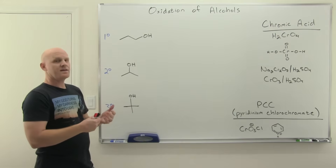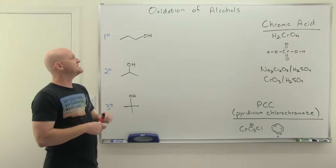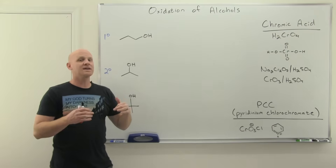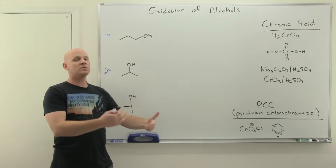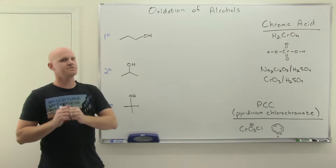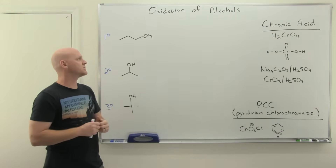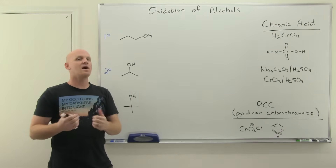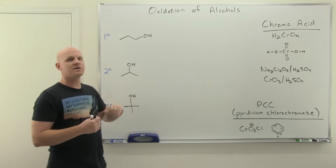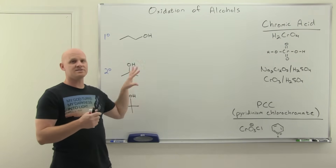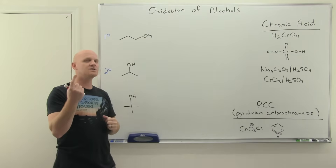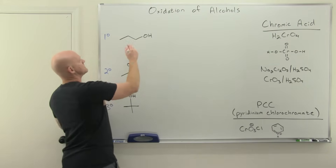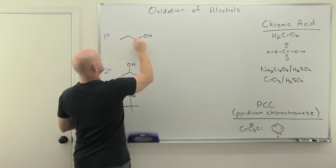If you remind yourself of what the definition of oxidation is: you're going to gain more bonds to electronegative atoms, like oxygen, and lose bonds to hydrogen — that's oxidation. Every step of oxidation here is going to do that with alcohol. It's going to gain one bond to oxygen and lose one bond to hydrogen.